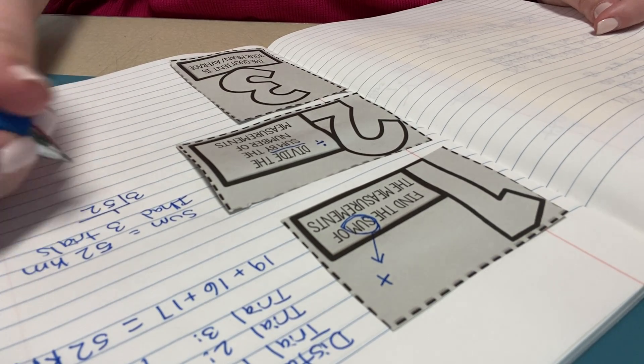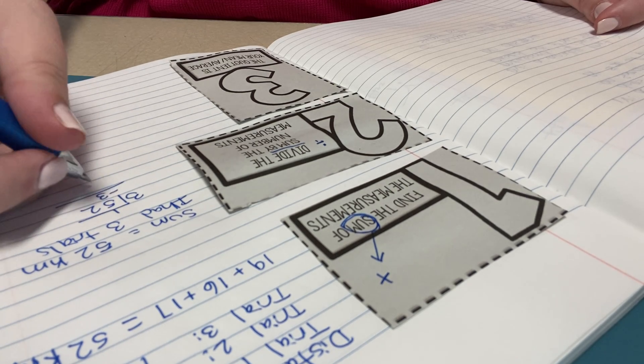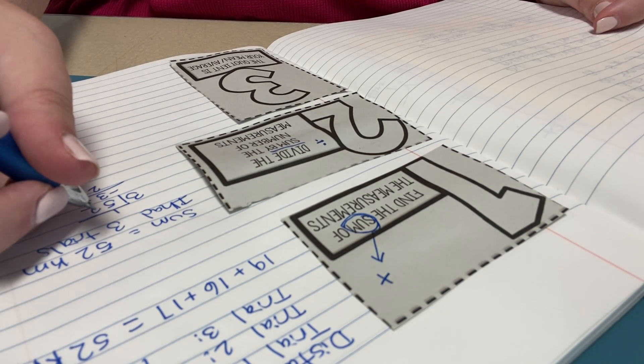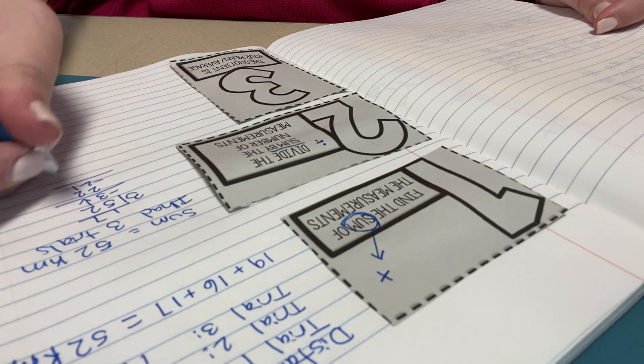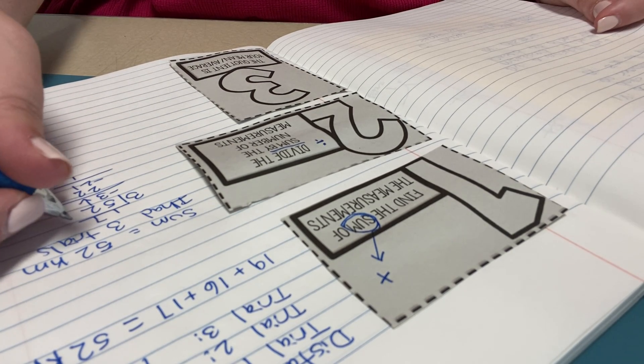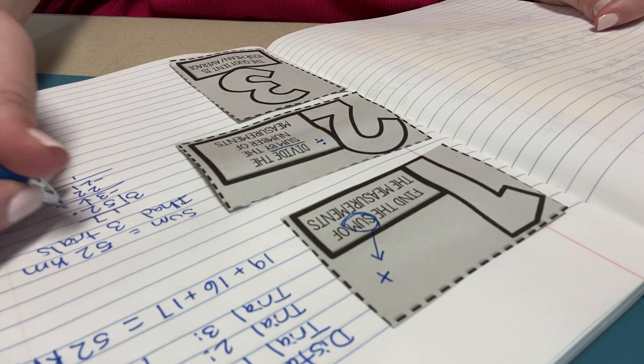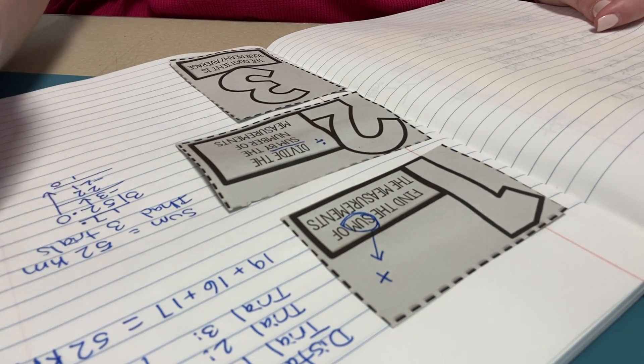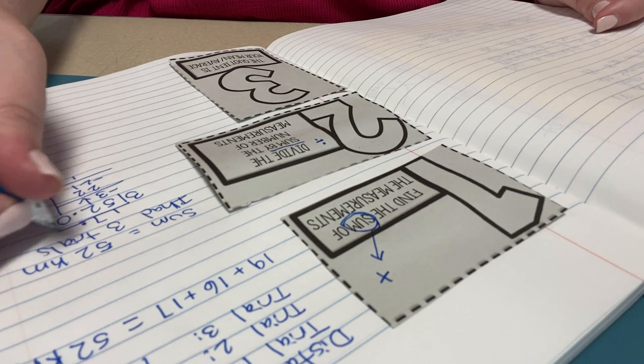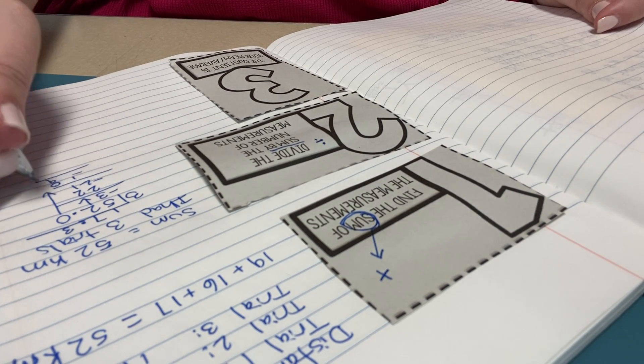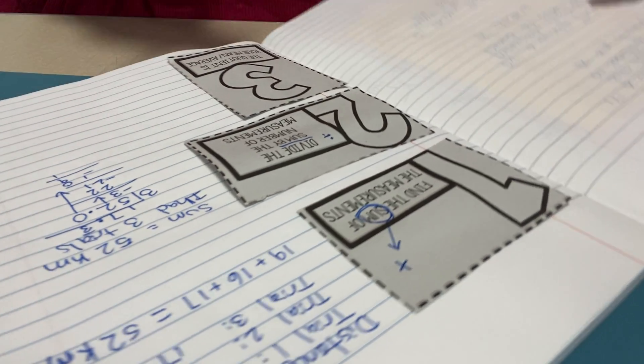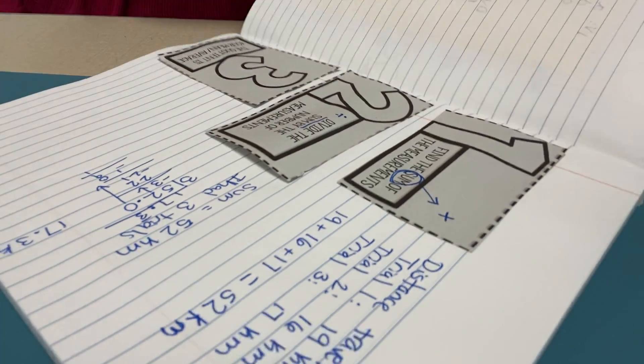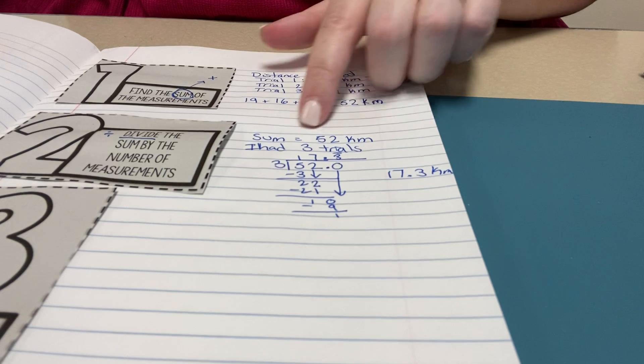Three goes into five, one time. I subtract three from five, bring down the two. Three goes into 22, seven times. So 17 remainder one, but I actually need to add a zero and annex the zero. Three goes into 10 three times, which is nine. And I'm going to have a repeating decimal. So 17.3 kilometers is what I got when I divided three into 52.